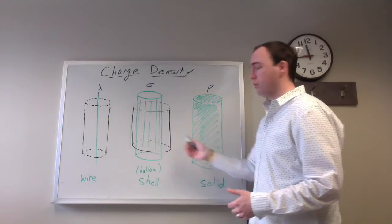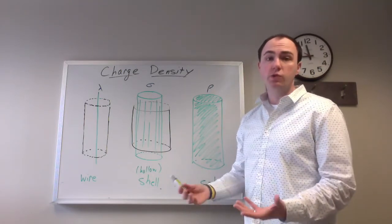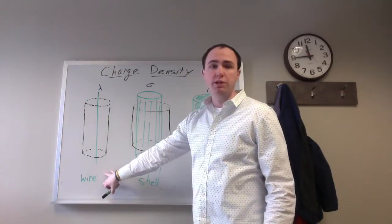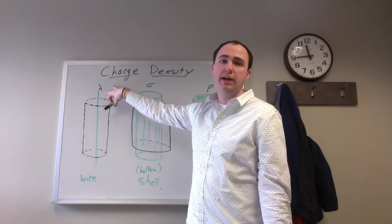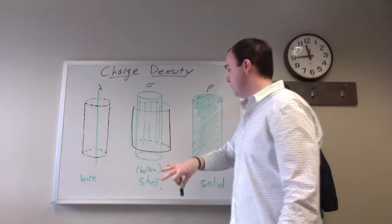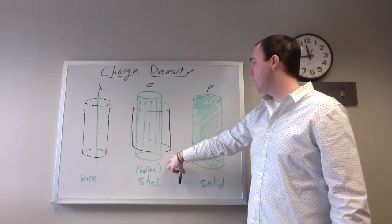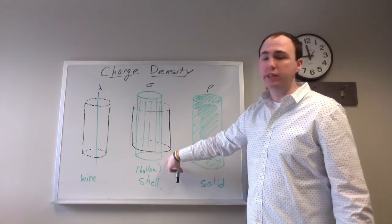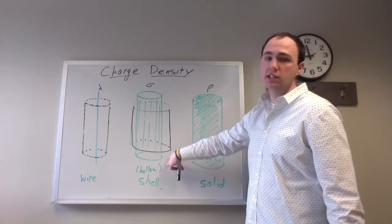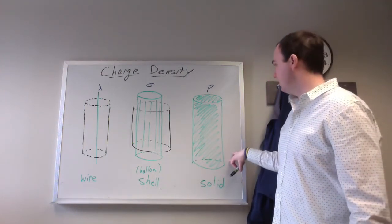I've got three different pictures here, all of cylinders or situations with cylindrical symmetry. We have a wire, which is a one-dimensional thing, so all you can characterize it by is a length, and so it has a linear charge density. We've got a hollow cylindrical shell, which has only a surface area, so the charge density gets spread over the surface. And then we have a solid cylinder.